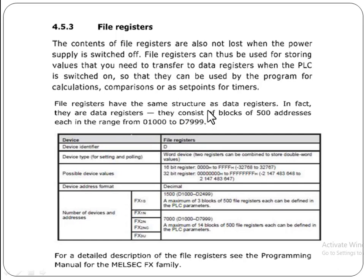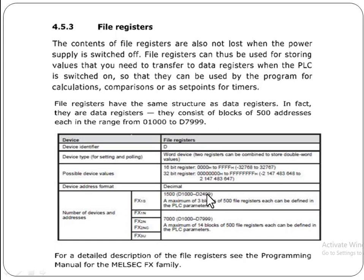File registers have the same structure as data registers. In fact, they are the data registers. They consist of blocks of 500 addresses each, in the range from D1000 to D7999. They are also denoted with D, and are available in 16-bit and 32-bit register formats. Device addresses are in decimal format, and they are present in the form of blocks of 500 file registers.